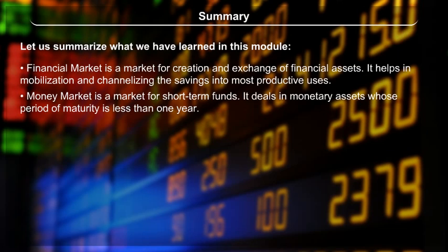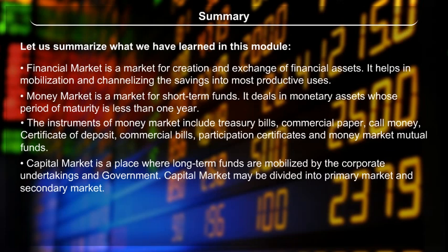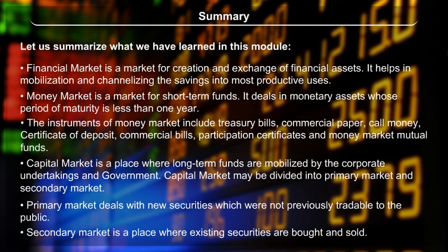Instruments of the money market include treasury bills, commercial paper, call money, certificate of deposit, commercial bills, participation certificates, and money market mutual funds. Capital market is a place where long-term funds are mobilized by corporate undertakings and government. Capital market may be divided into primary market, which deals with new securities not previously available to the public, and secondary market, where existing securities are bought and sold.